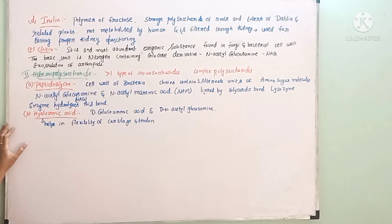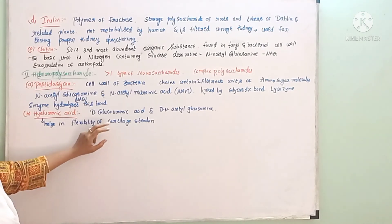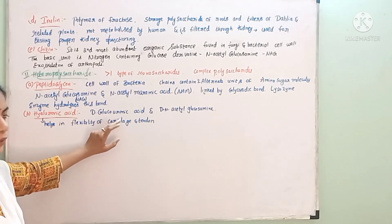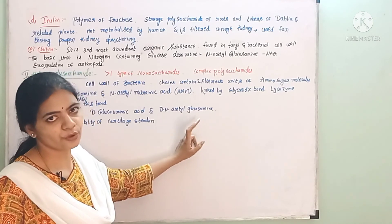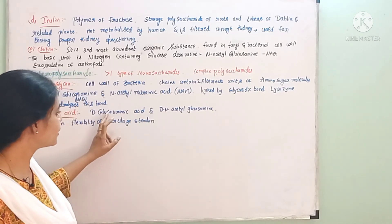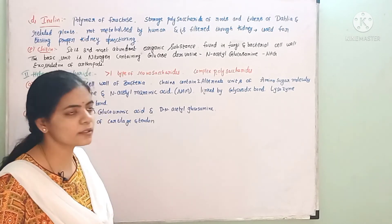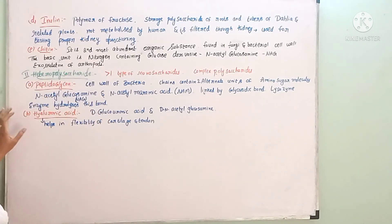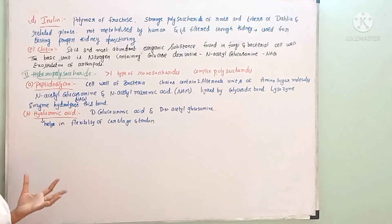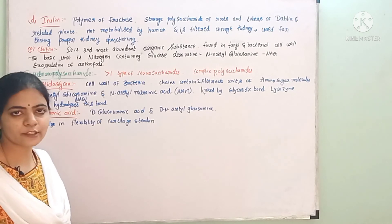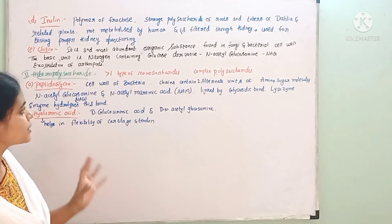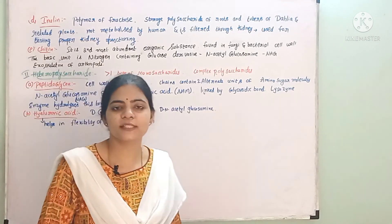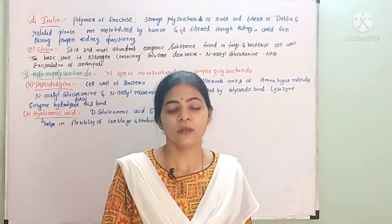The next heteropolysaccharide is hyaluronic acid. Hyaluronic acid is composed of D-glucuronic acid (a carboxylic acid) and N-acetyl glucosamine. These components form hyaluronic acid. These are the examples of homopolysaccharides and heteropolysaccharides.